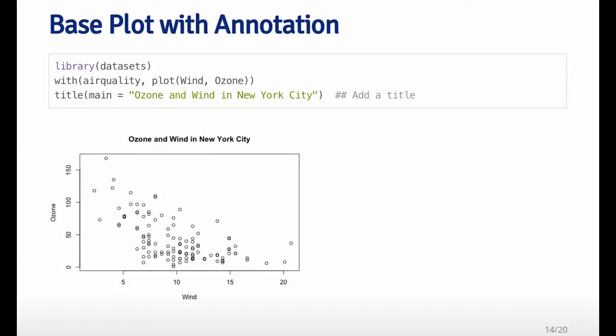Here's a couple examples of how to make plots and then annotating them. Here I'm plotting the wind and ozone that I had before, a scatter plot. But now I'm adding a title to the top of the plot. So here you can see it's ozone and wind in New York City.